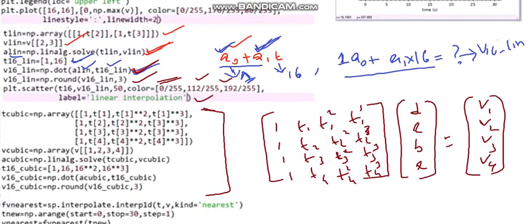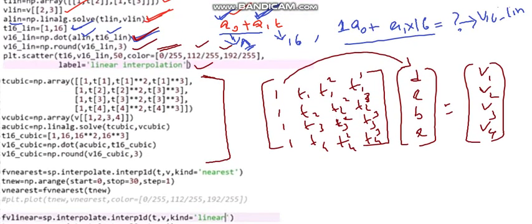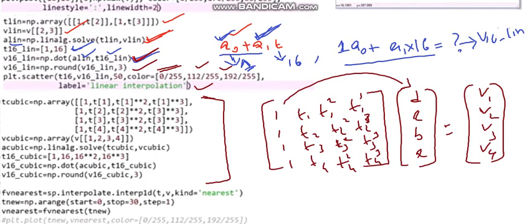Note that the coefficients are in reverse order because we have taken [1, t, t², t³], so the polynomial is d + c*t + b*t² + a*t³. We are considering cubic polynomial interpolation — not cubic spline. For the cubic case we need at least 4 points, so we take t1, t2, t3, and t4.